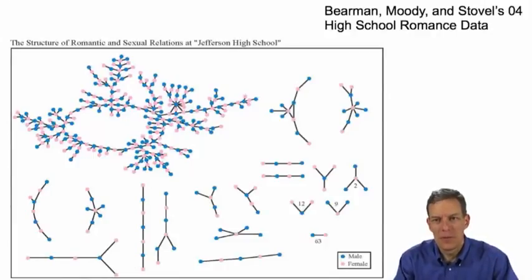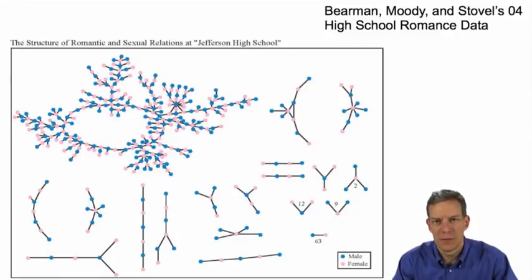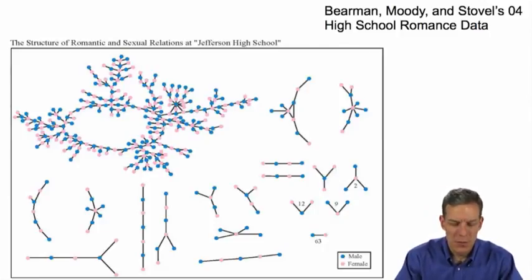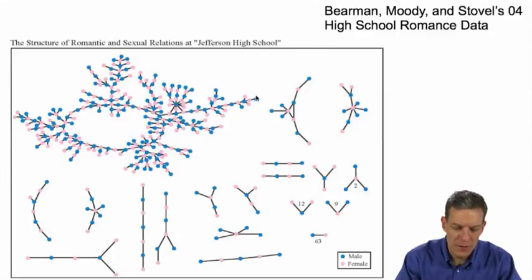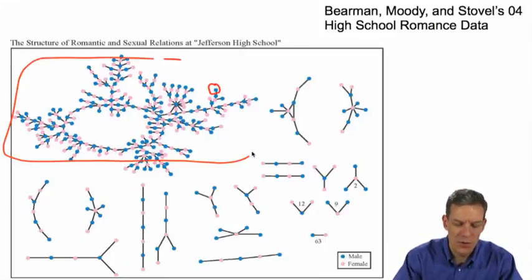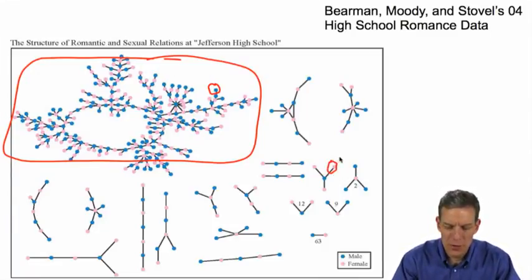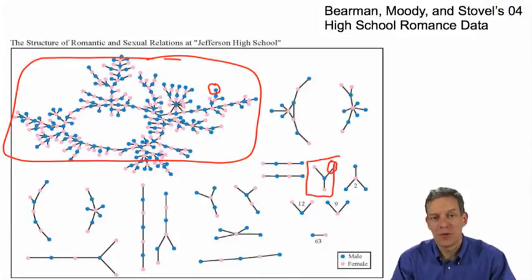Just to remind you, this is a picture from Bearman, Moody, and Stovel's 2004 data, the high school romances. This would be something if we were thinking about transmission of mononucleosis, we could think about a network like this. What we end up with is the component structure will actually tell us a lot. So if an initially infected individual ends up being in one of these nodes, then if they end up being in a large component, then things can spread quite extensively. If they end up being in a small component, then things can be quite limited.